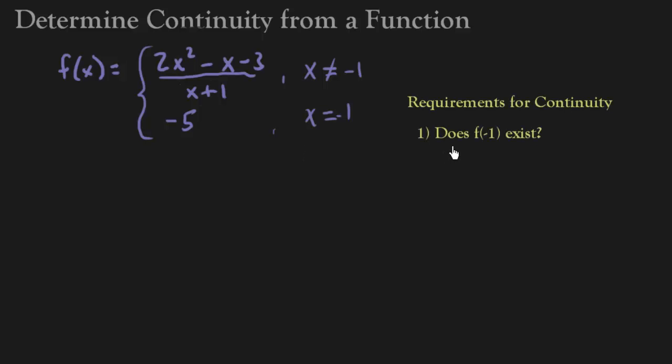Now first requirement for continuity was that the point has to exist, f of negative 1 has to exist. So what happened was when we looked at this function, right, x couldn't be negative 1. But now that I added this little piece, I know what f of negative 1 is, right, because now I'm just basically saying f of negative 1 is negative 5. So check, f of negative 1 does exist.